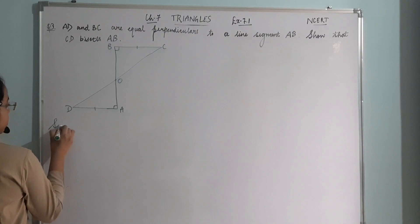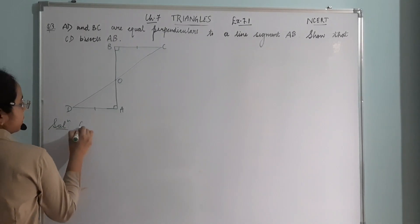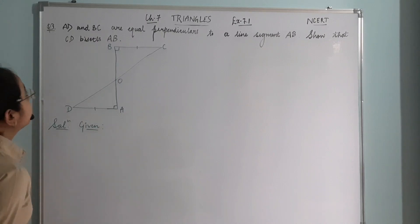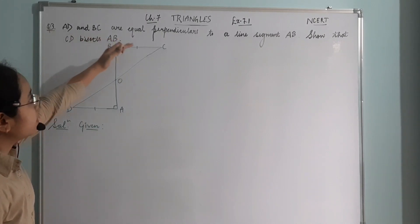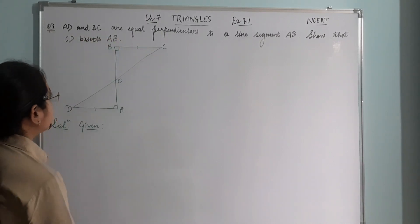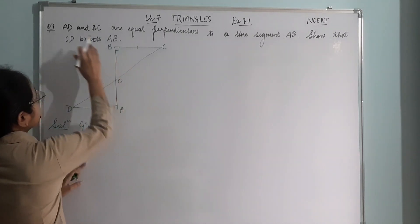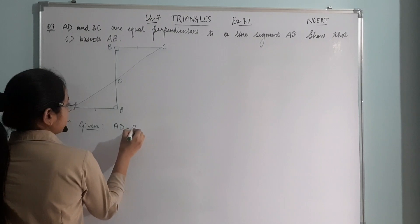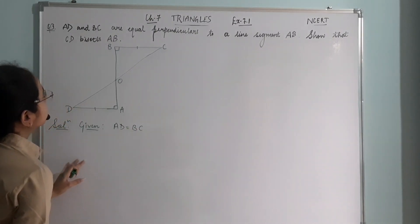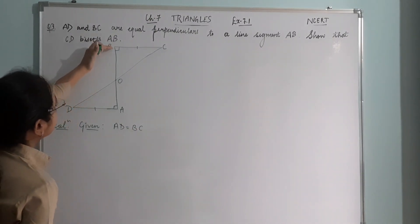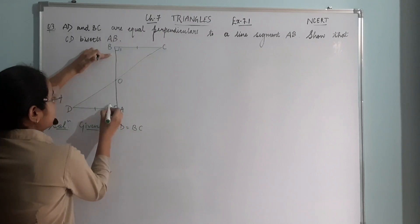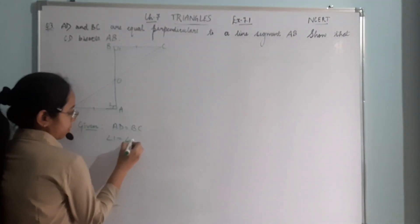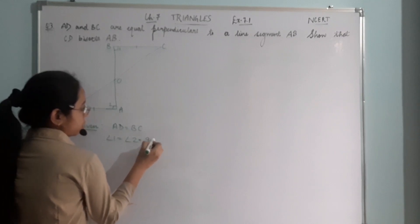Solution. First, let's write what is given. Given: AD and BC are equal perpendiculars to a line segment AB, that means AD equals BC, and angle 1 equals angle 2, which is equal to 90 degrees.